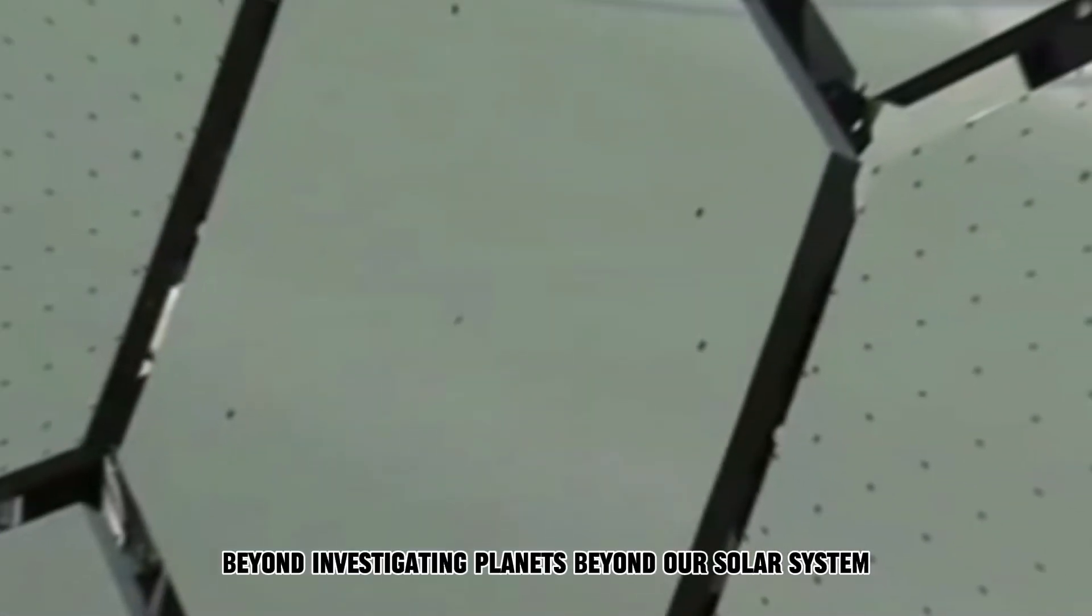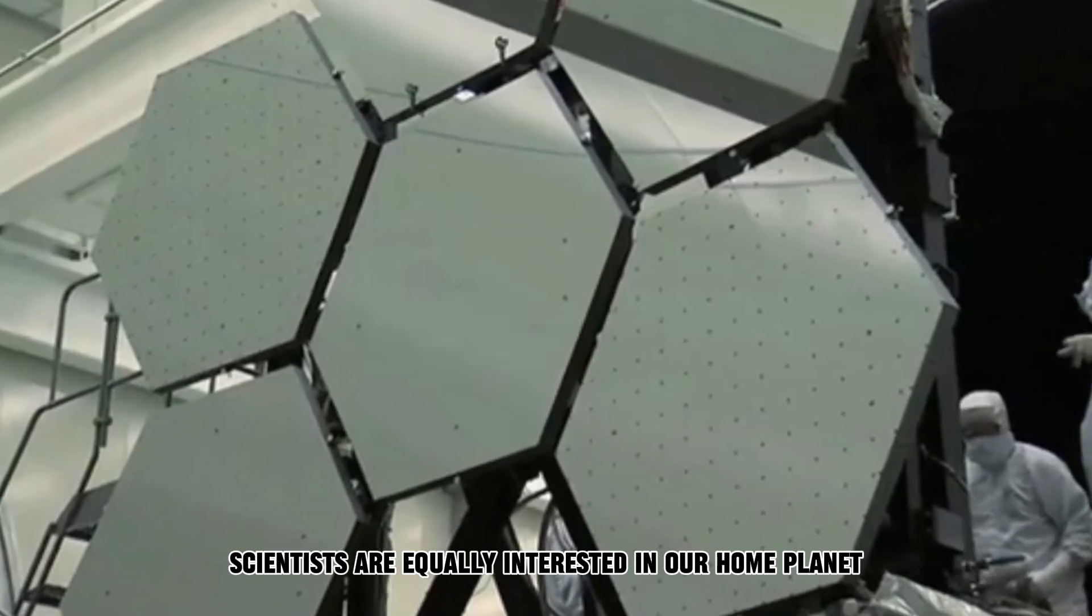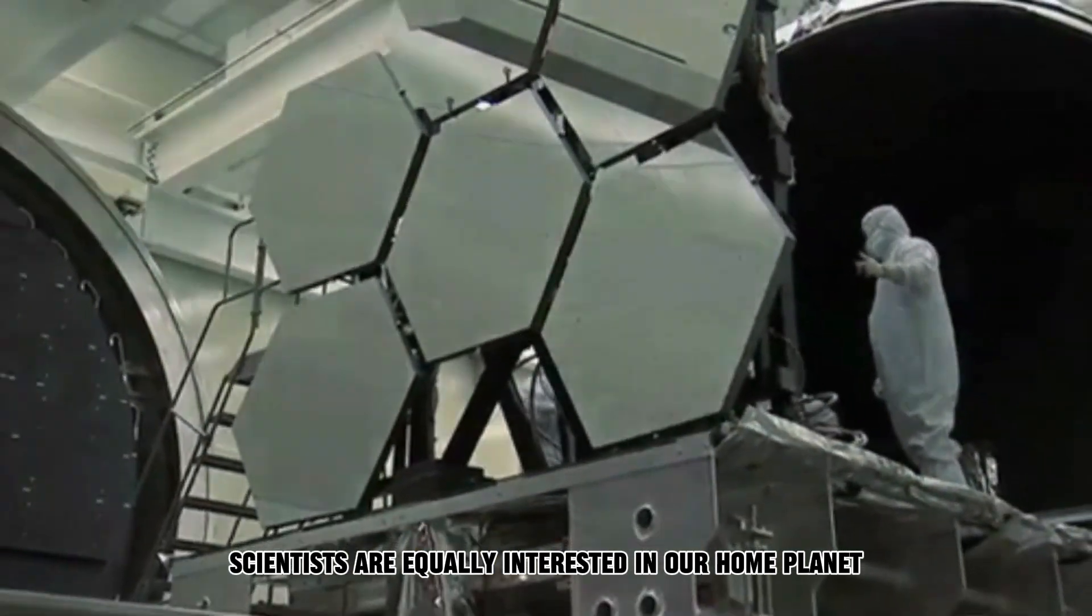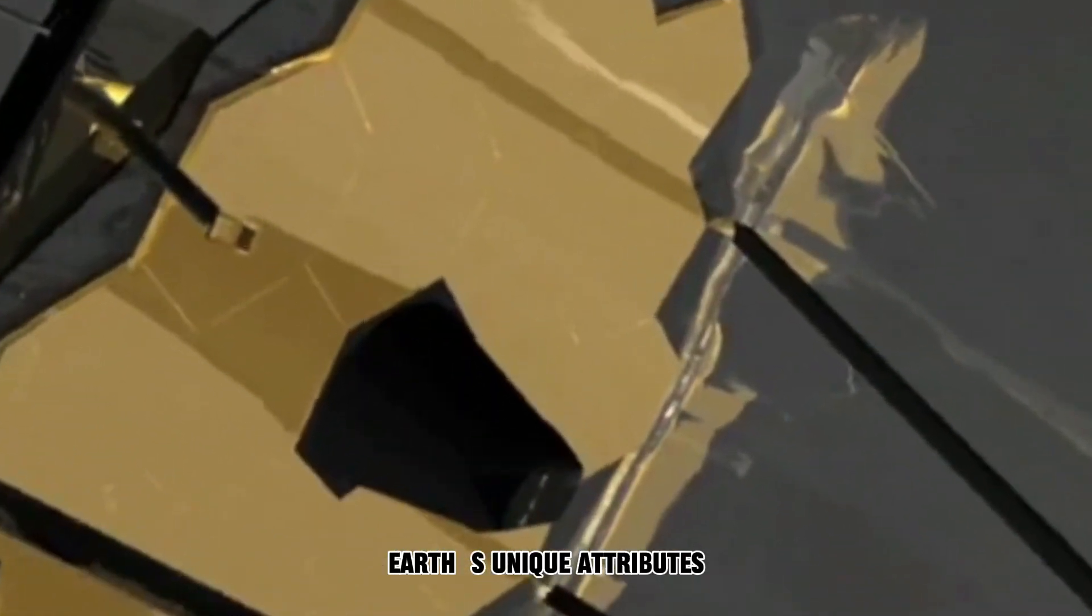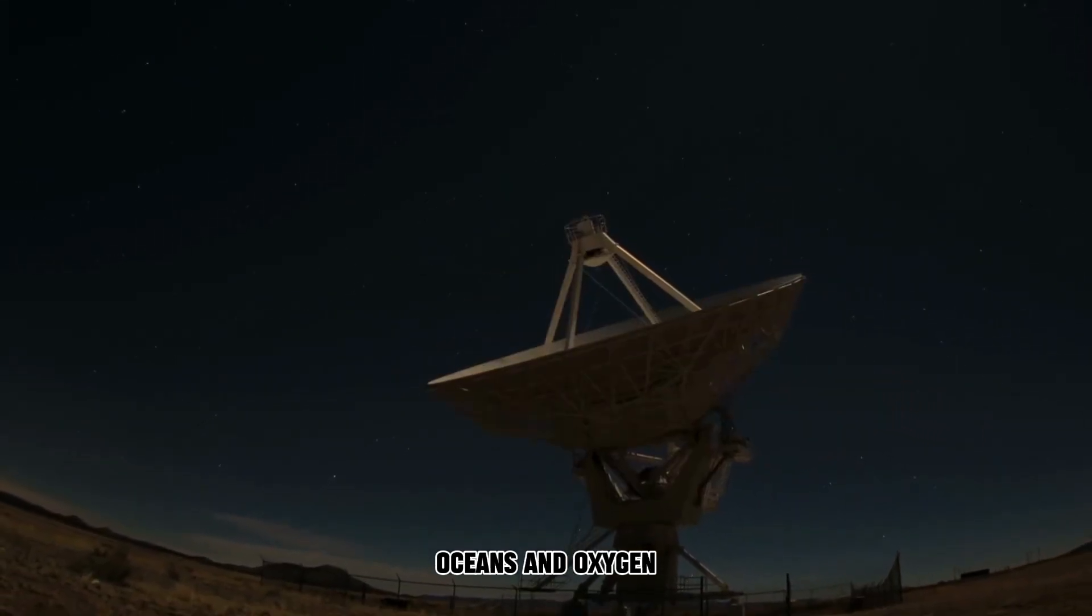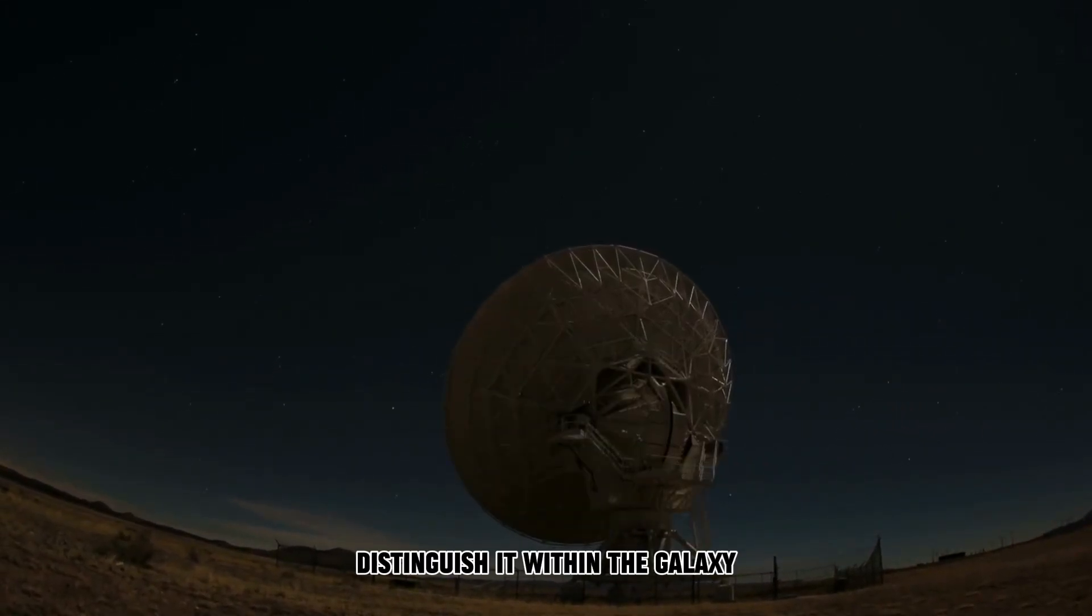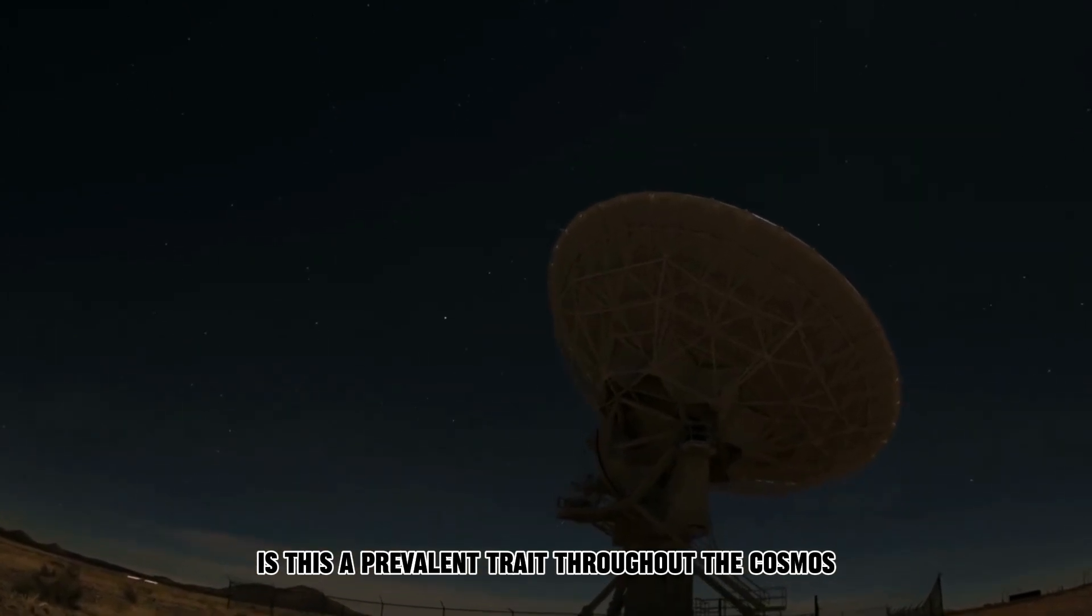Beyond investigating planets beyond our solar system, scientists are equally interested in our home planet. Earth's unique attributes, liquid water oceans and oxygen, distinguish it within the galaxy. Is this a prevalent trait throughout the cosmos?